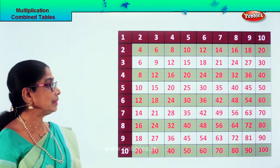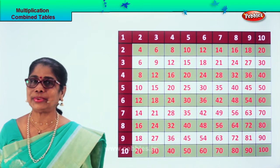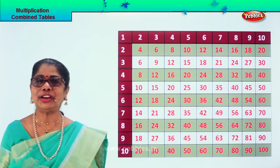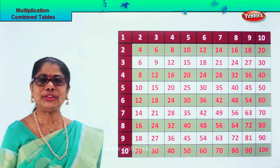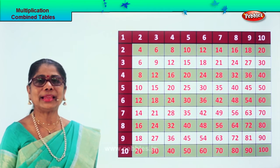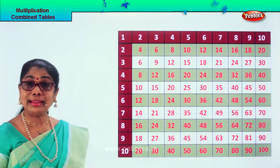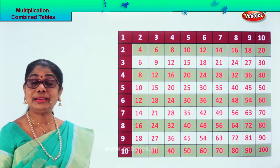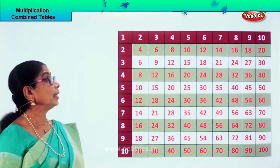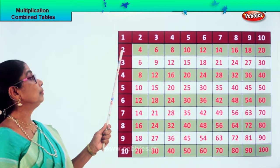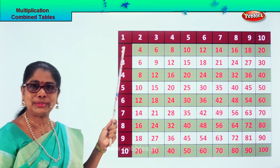Look at this now. Now you have learned tables of two, haven't you? Now look at this. Looking at the chart here, it's very easy to say aloud. Now two — let's say the two times table.